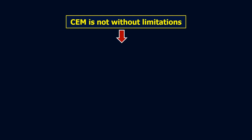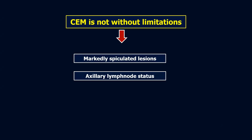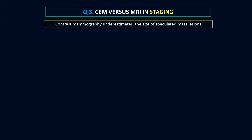In staging, we must know our limitations. The limitations of contrast mammography in staging include: whenever we have markedly spiculated lesions, they are usually underestimated. We can never assess axillary lymph node status using contrast mammography. Unless the lesion is separate from the chest wall, and unless skin invasion comes tangential with the beam in our mammography view, we can never assess skin infiltration or chest wall infiltration.